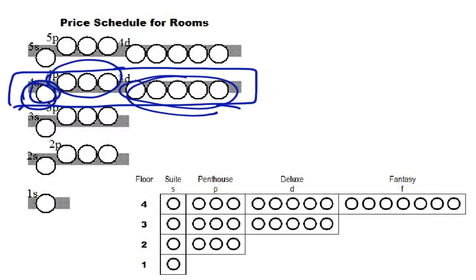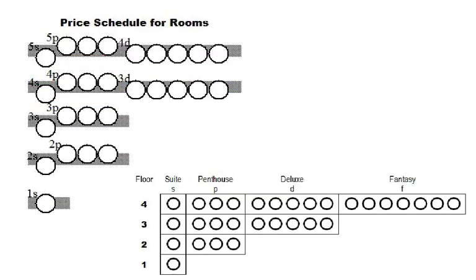The same thing happens when you get to the 4D rooms — they're in the same price range as the 5S and 5P rooms. The big idea here is to take any atom and start filling in electrons into this hotel. The electrons are always on a budget, so they want to go into the lowest energy — the lowest price room — that they possibly can. The price in this analogy is really the energy, and the rooms are really called orbitals.